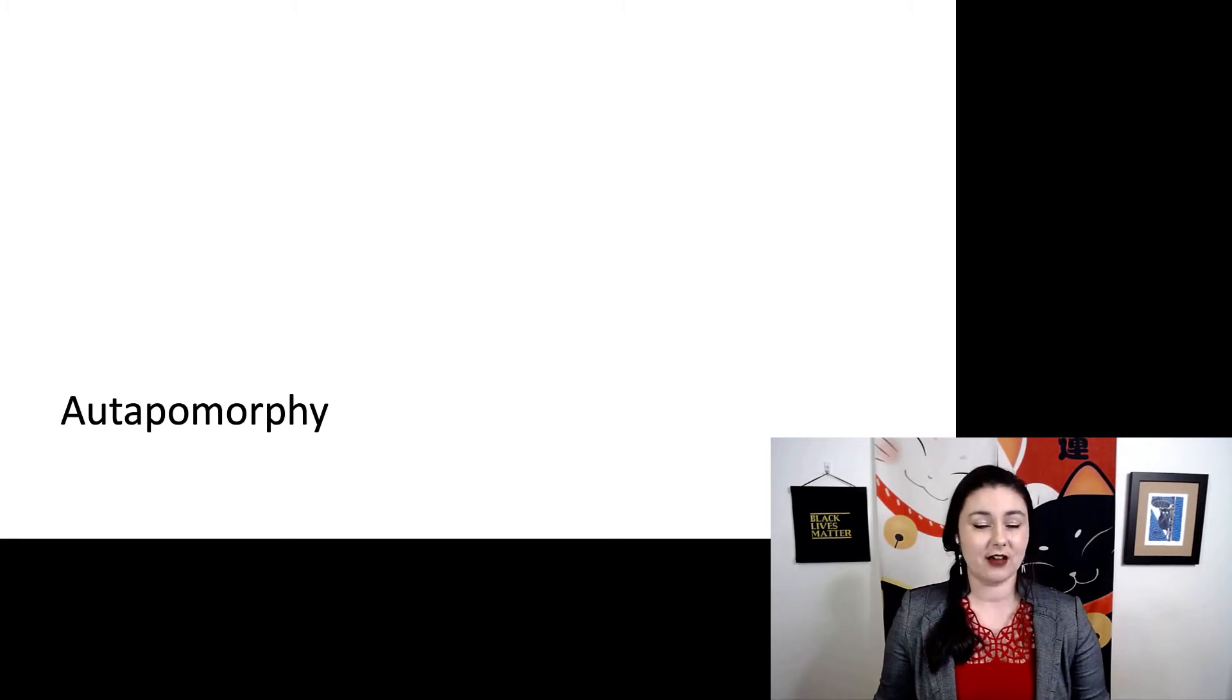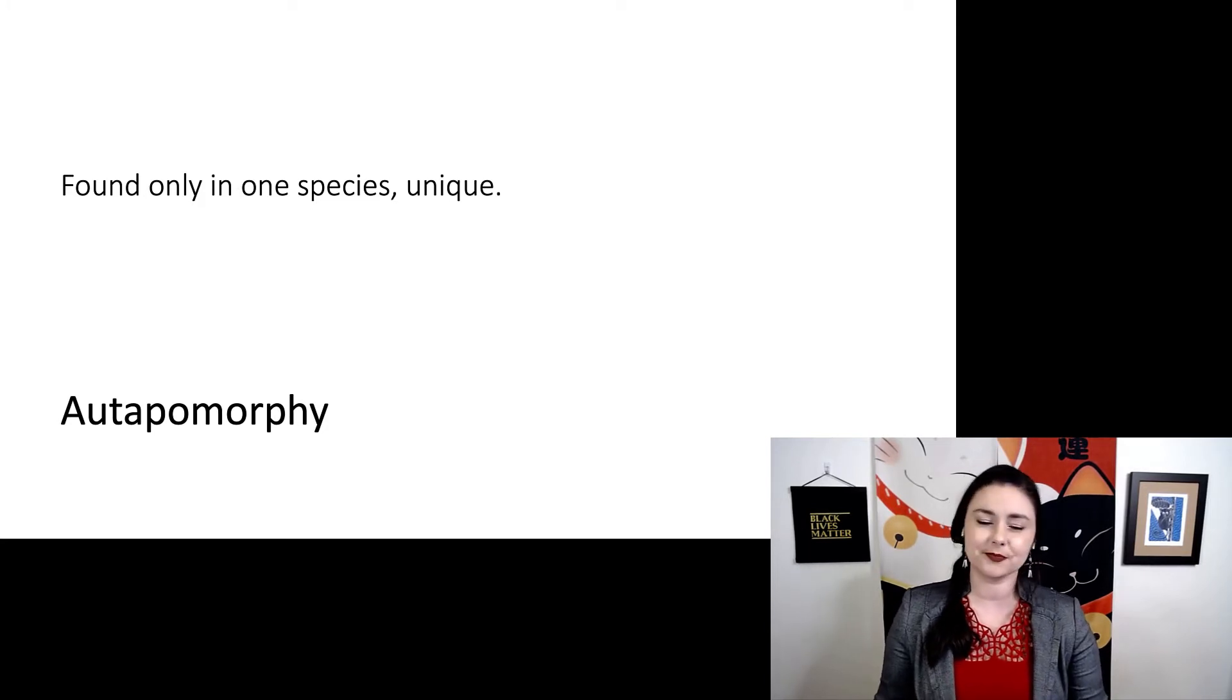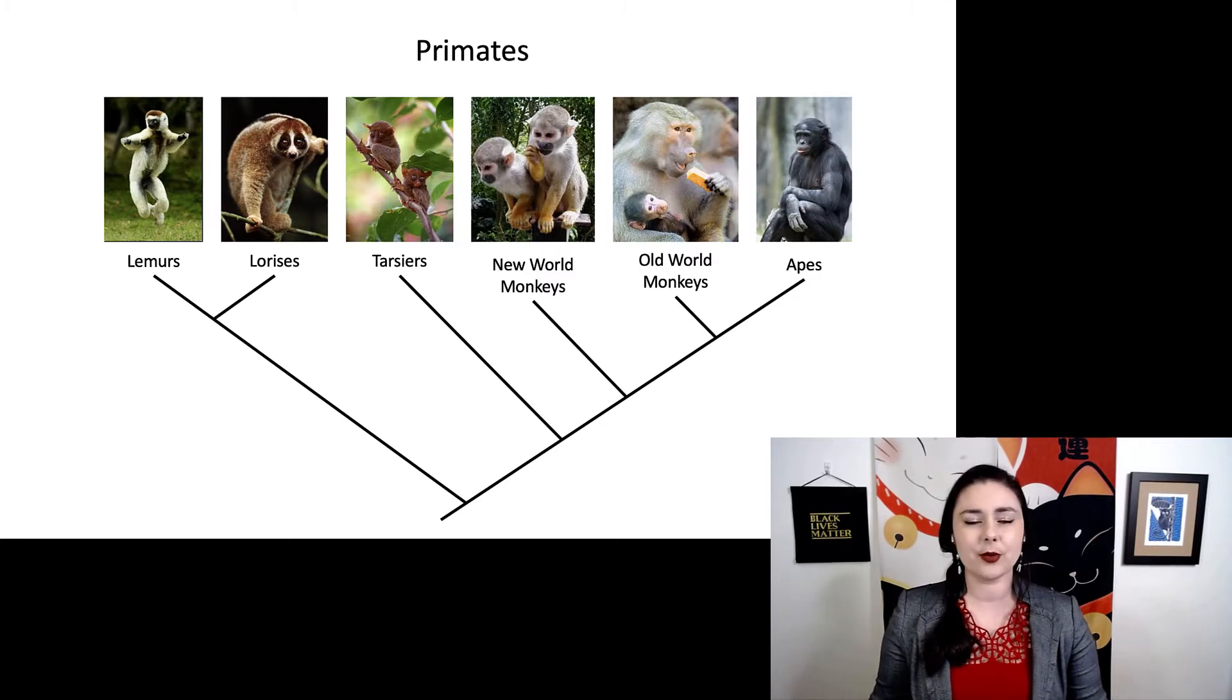The last type of trait we can have is an autapomorphy. Auto means self. So auto and then apo is new. Morph is form. So a self new form. This is a trait that is found in only one species. You might also call it unique. So of course I use a tarsier example. One of the reasons tarsiers are special, they have two grooming claws. No other primate has that.